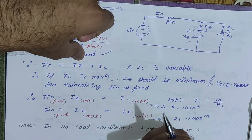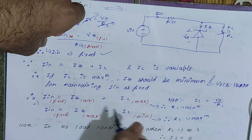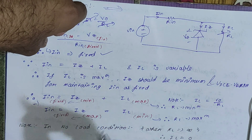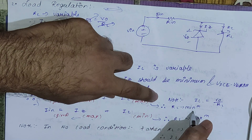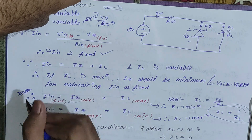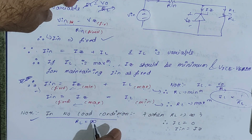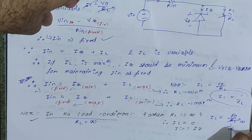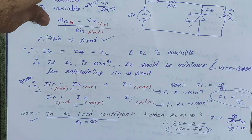In load regulation: if IL is maximum, Iz must be minimum to keep Iin fixed; if IL is minimum, Iz must be maximum. Since IL = Vo / RL, if IL is maximum then RL is minimum (inversely proportional), and if IL is minimum then RL is maximum. In the no-load condition, RL is infinity, so IL = Vo / RL = 0, and therefore Iin equals Iz entirely.